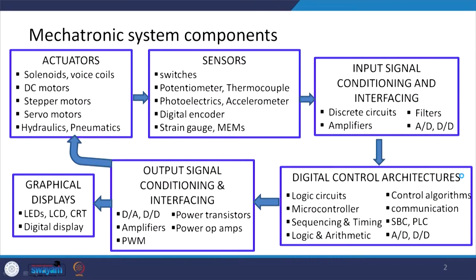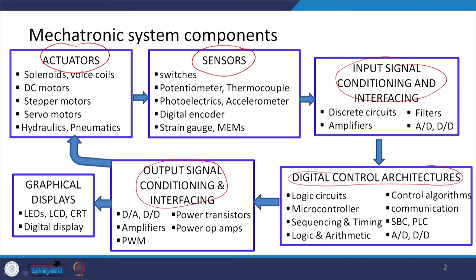This block diagram essentially shows the important mechatronics components, where you can see that usually we have an actuator and there is a sensor, and you have input signal conditioning and interfacing, then you have the digital control architecture and output signal conditioning and interfacing, and then we have display for viewing purpose. Out of these mechatronics components, I am going to talk about the input signal conditioning and interfacing.